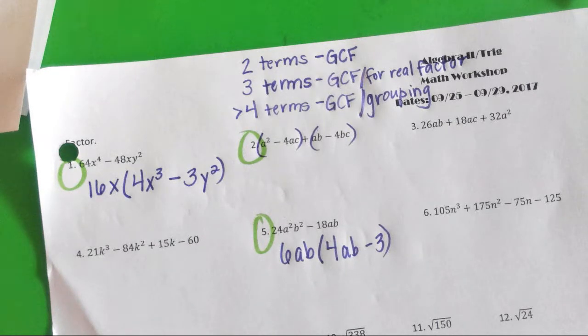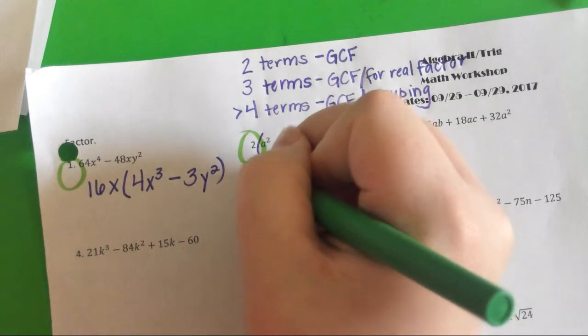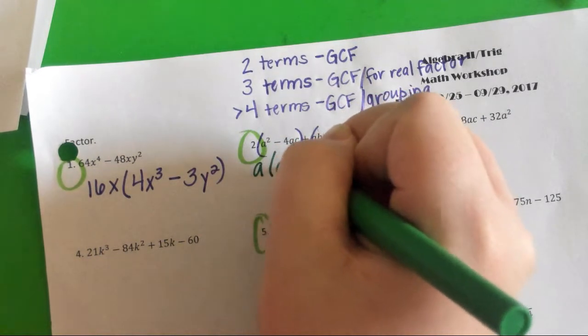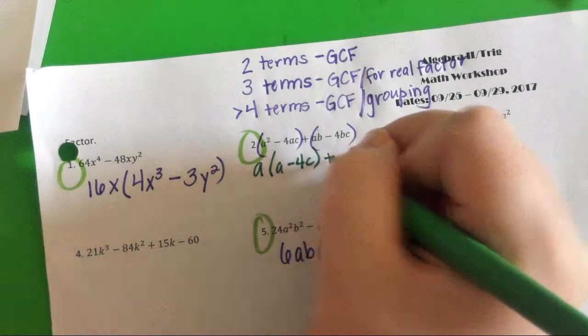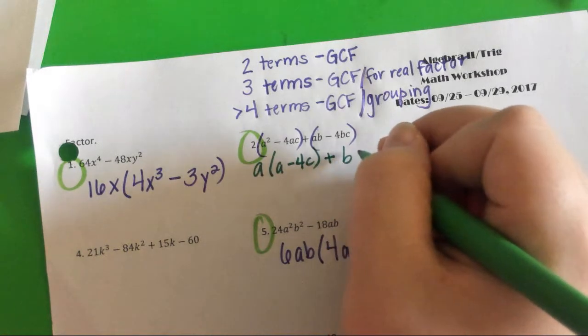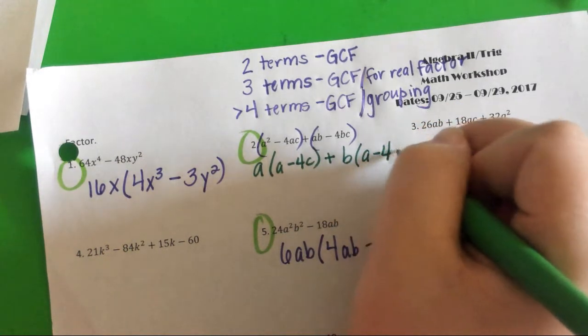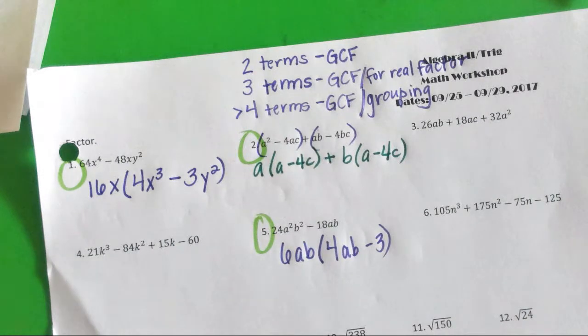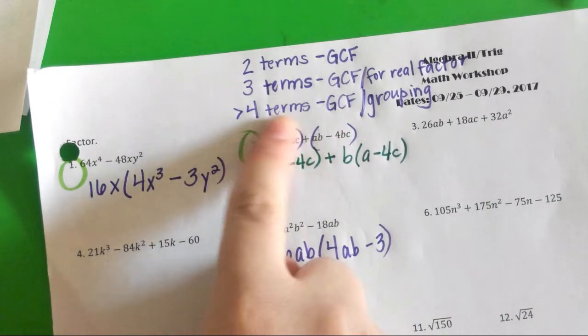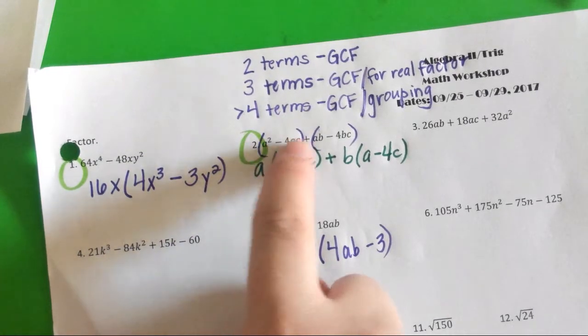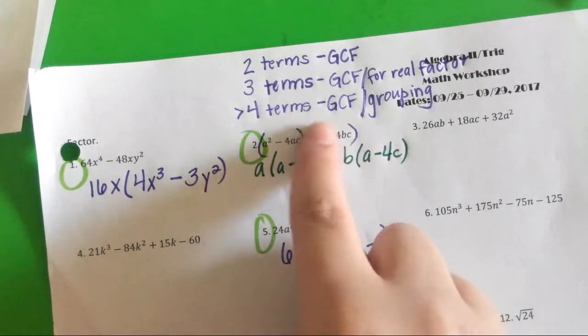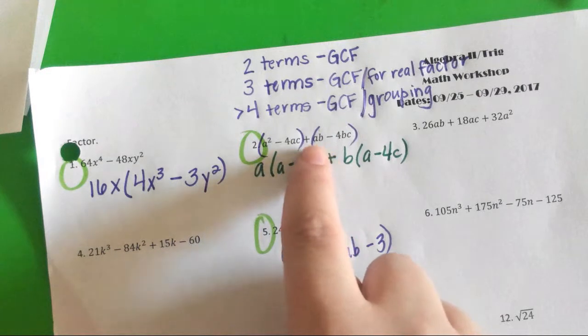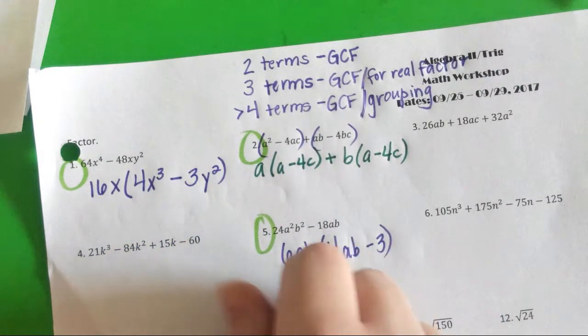We're going to see if we can pull out a GCF from either of these binomial pairs. With that first pair, A^2 - 4AC, what can we factor out? And what would we be left with? A minus 4C. And then with that second pair, what can we factor out? B. And what would we be left with? A minus 4C. So let's say all the words again. We broke it up into two different groups.